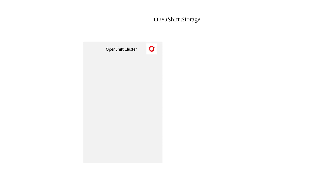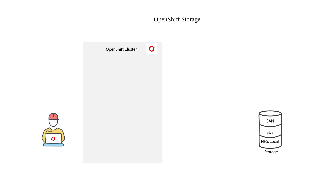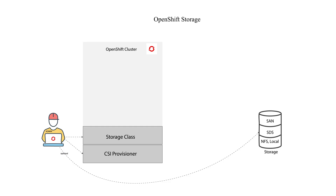We have our OpenShift cluster and a black box called storage. We'll go over different types of storage later, but for now assume it can be any enterprise type storage. To enable integration between OpenShift and storage, the OpenShift administrator will install what we call a CSI driver — software that translates operations between OpenShift and your storage system. CSI drivers are created and maintained by storage vendors, and one of their roles is to create storage classes. In one OpenShift cluster you can have storage classes for Pure Storage, Dell EMC, or another software-defined storage.